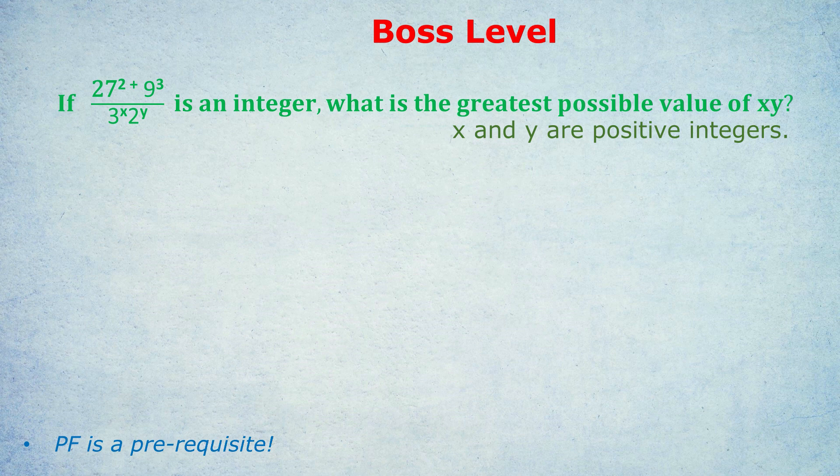The first thing that many of you will be confused by is the fact that it's 27 squared, 9 cubed, not a prime number like 2 or 3. And that's why I've written at the bottom, PF or prime factorization is a prerequisite. You have to prime factorize if you're going to deal with exponents.